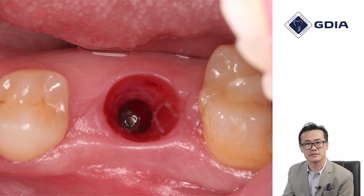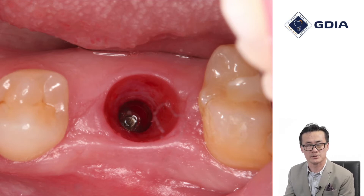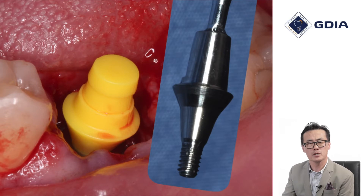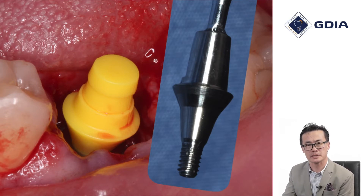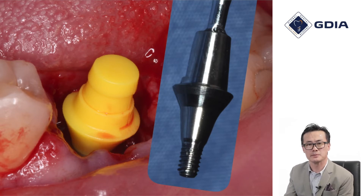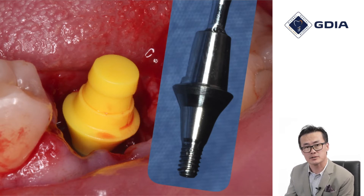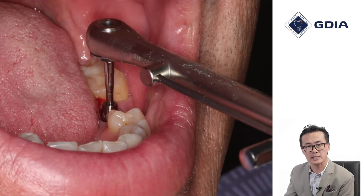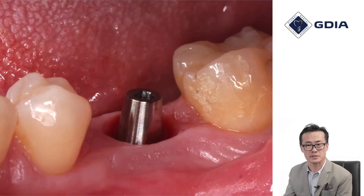A few months later, healing is uneventful and we have a very nice, healthy gingival sulcus associated with the implant and surrounding structure. At the right moment, that predetermined stock abutment — in this case a product called Sole abutment, a one-piece prefabricated abutment of the exact same dimension as the try-in — is being utilized, and the abutment is being torqued in.